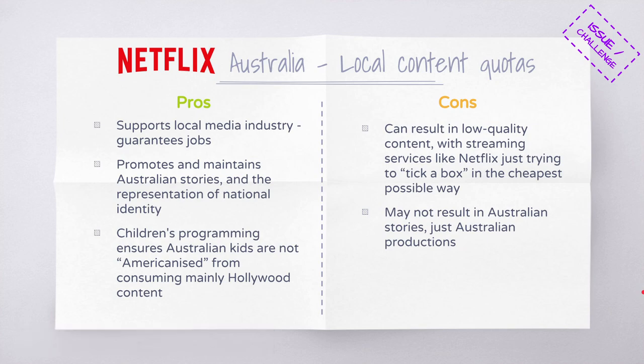By looking at these examples — how the Classification Board works and how local content quotas are currently being debated in relation to Netflix — you can see that government regulation in Australia has previously been very effective, but in a contemporary media landscape it faces some significant challenges. In the next video, we will look at how self-regulation works and the issues and challenges that come with that.